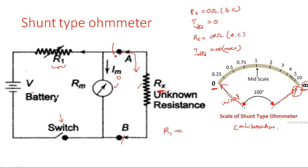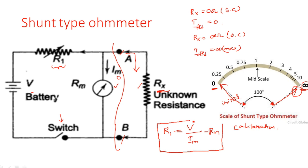If you eliminate the part between A and B, the circuit simply appears like a voltmeter — a multiplier resistor R1 in series with the meter. In that case, what is the formula for the resistor? It is V divided by Im minus Rm. There is no need to do a lot of calculations for the shunt type ohmmeter like in the series type. Here we have only one resistor, and when you eliminate the unknown resistor Rx, it simply appears like a normal DC voltmeter. Calibration is also in the conventional way from left to right.